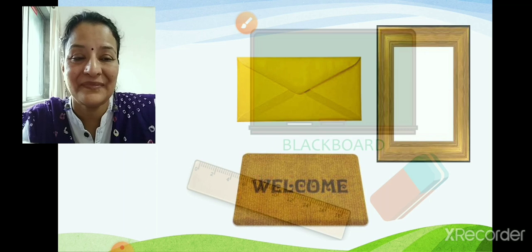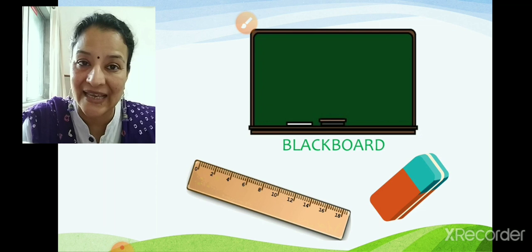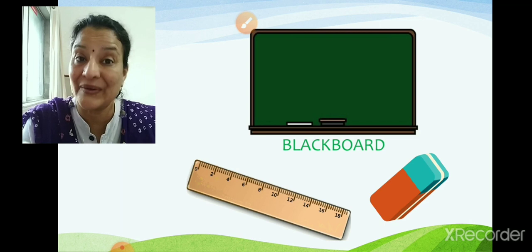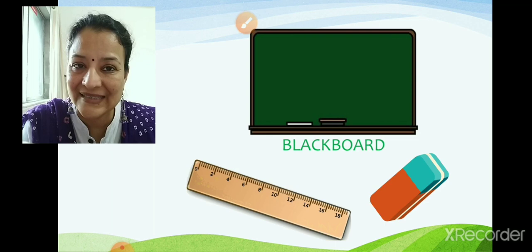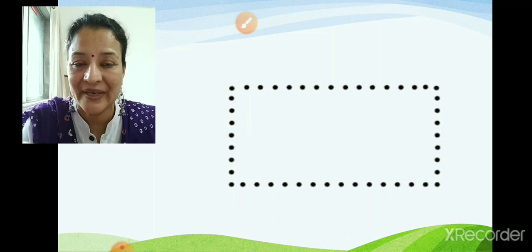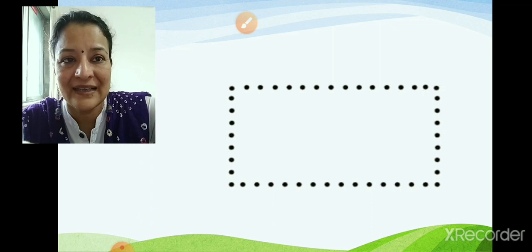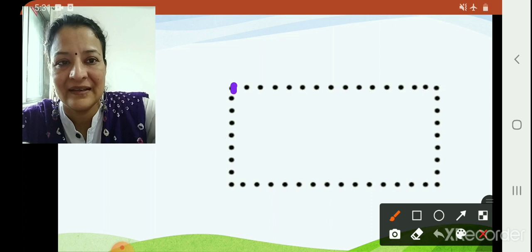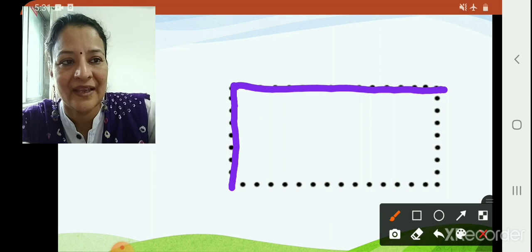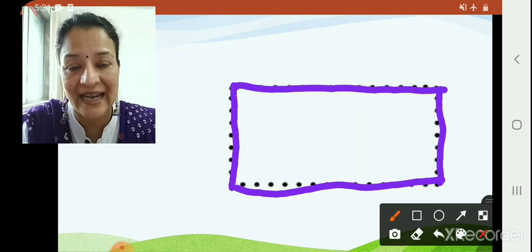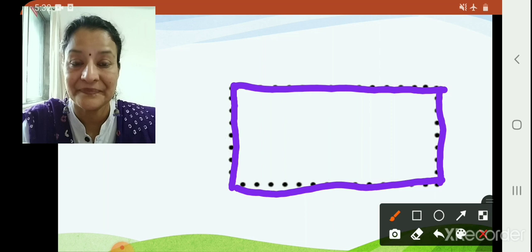Your board — you write A to Z, 1 to 100 — your blackboard is also rectangular. Your scale is rectangular and the eraser is also an example of rectangle. Now, we are going to trace so that you can understand what a rectangle is more clearly. Place your finger and trace on the dotted lines — like this, then from here down, again here — two standing lines and two sleeping lines. This is a rectangle.